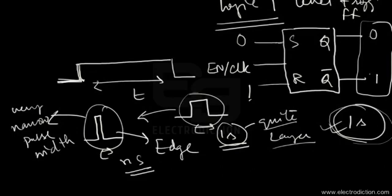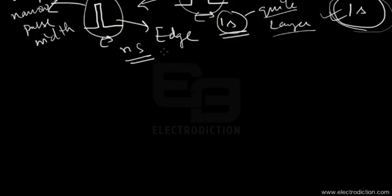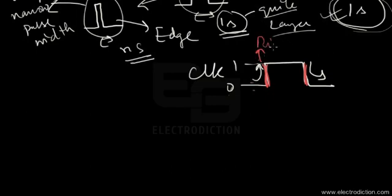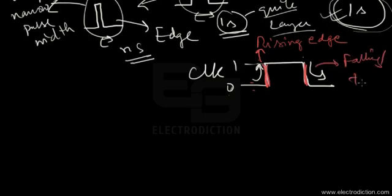To understand how edges are generated, consider a clock pulse: edges are generated either at the rising or falling edge of the clock pulse. The clock pulse has two states — logic 0 and logic 1 levels. When the clock signal transitions from logic 0 to logic 1, that is called the rising edge. When it falls from logic 1 to logic 0, it is referred to as the falling or trailing edge.